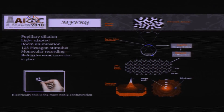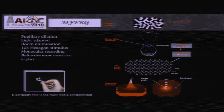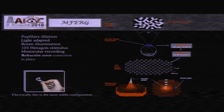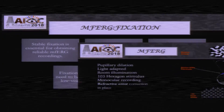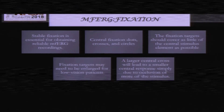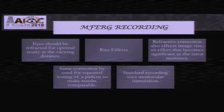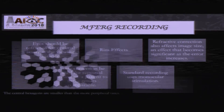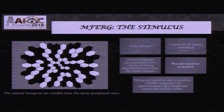When recording a multifocal ERG, it is done under pupillary dilatation in a light-adapted condition. Usually we use a 103 hexagon stimulus, and monocular recording is done with the refraction in place. Fixation is very important and should be monitored throughout. Care should be taken that when correcting the refraction of the patient, rim effects should not affect the final ERG.